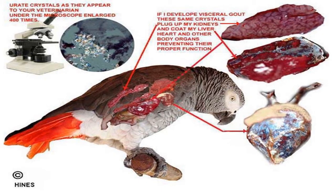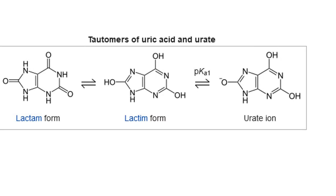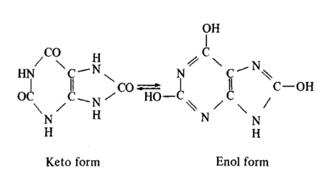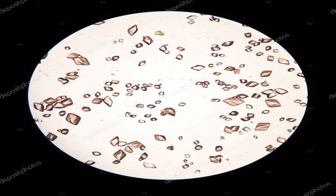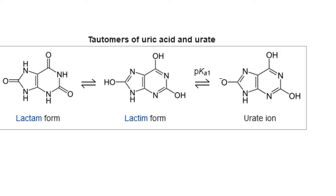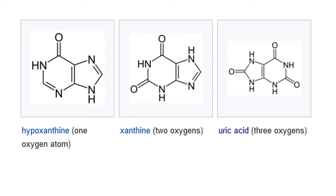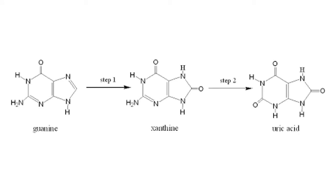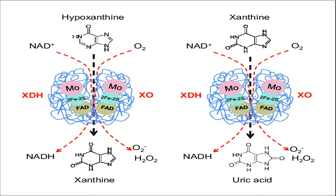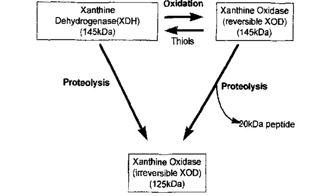Uric acid displays lactam-lactim tautomerism, also defined as keto-enol tautomerism. Although the lactim form is expected to possess some degree of aromaticity, uric acid crystallizes in the lactam form, which is indicated to be much more stable. Xanthine oxidase is an enzyme which catalyzes the formation of uric acid from xanthine and hypoxanthine, which in turn are produced from other purines. Xanthine oxidase is a large enzyme whose activity consists of the metal molybdenum bound to sulfur and oxygen. Within the cells, xanthine oxidase can exist as xanthine dehydrogenase and xanthine oxyreductase.